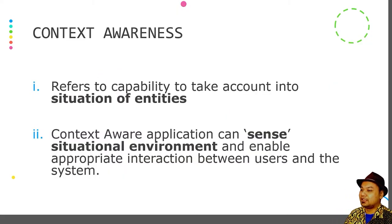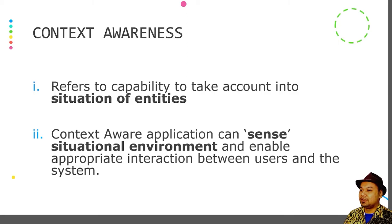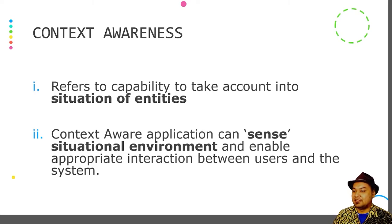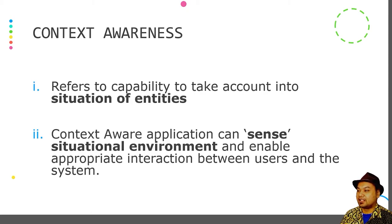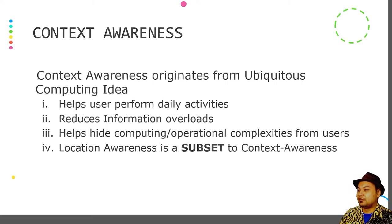Next we look into context awareness. Context awareness refers to the capability to take into account the situation of entities. A context-aware application can sense the situational environment and enable appropriate interaction between users and the system — in this case, between the user and the mobile application. You can scan the environment, files, habits, sensors, and user profiles, and then make suggestions or recommendations to be delivered to you. Context awareness originates from the ubiquitous computing idea, where it can help users perform their daily activities while reducing information overload and hiding operational complexity from the user.